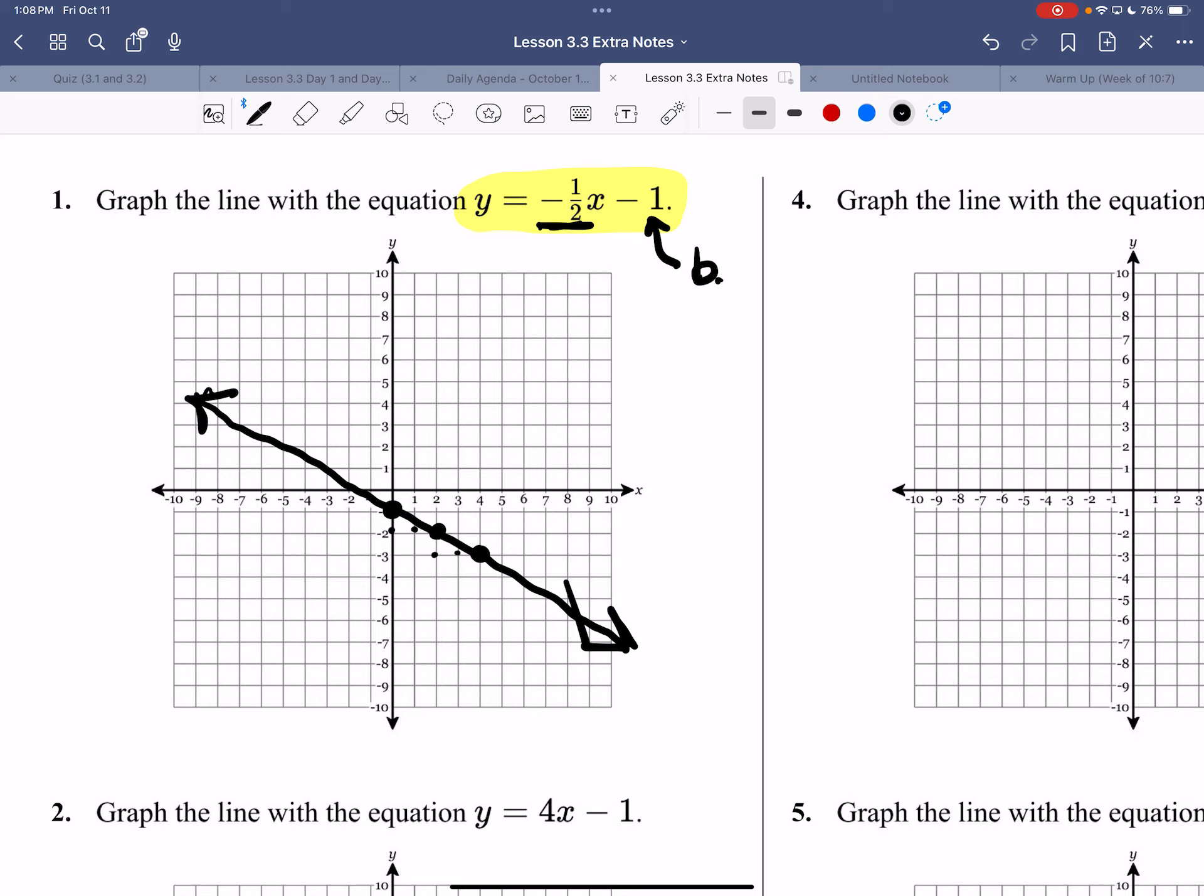So your y-intercept gives you one dot. You're going to use rise over run to create at least one, preferably two more dots. And then if you're just going to go back to elementary school, we're going to play connect the dots. So the key with this is the negative 1 half is rise over run. So that's how you're going to use your slope. It's going to tell you where to go compared to your y-intercept.